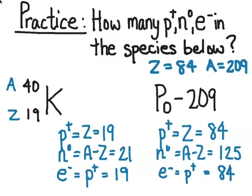We're going to extend this with another video that talks about ions and isotopes — another use of atomic symbols to describe other types of atoms, not just their elemental forms with no charge, but other atomic species as well. Stay tuned for that next UChem tutorial.